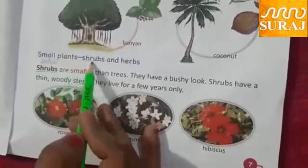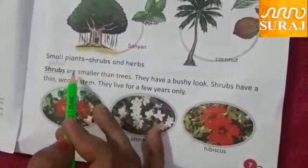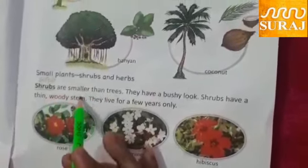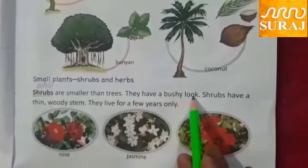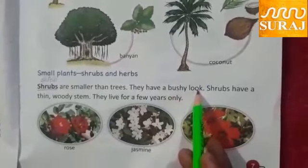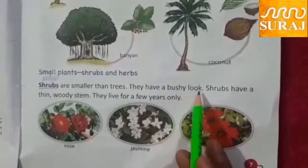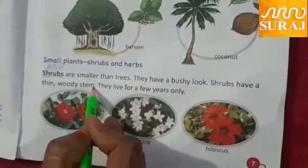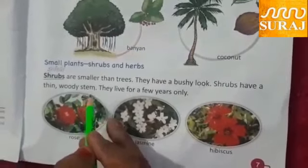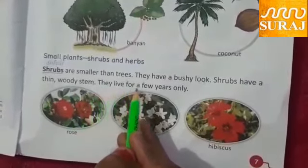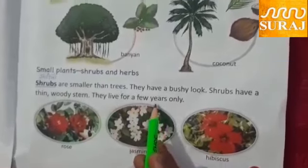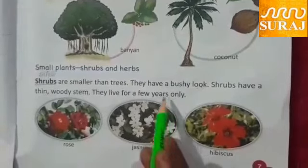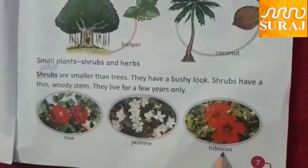Second, small plants — shrubs and herbs. Shrubs are smaller than trees. They have a bushy look. The stem is thin and they live for a few years only. For example, rose, jasmine and hibiscus.